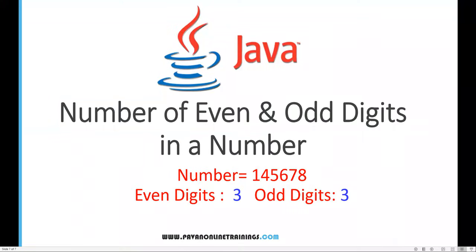Hi everyone, welcome. In this video I'm going to show you how we can count even and odd digits in a number. For example, given the number 1456789, how many even numbers are there and how many odd numbers are there? Four, six, and eight are even numbers — so three even digits total — and one, five, and seven are odd numbers, so three odd digits as well. Now we'll see how to do this programmatically.